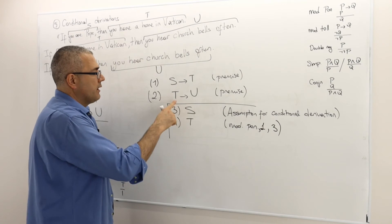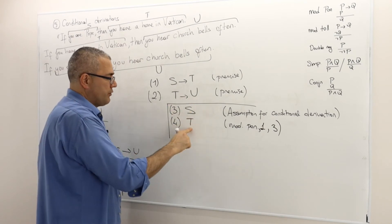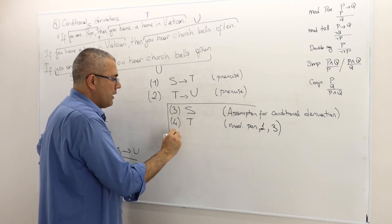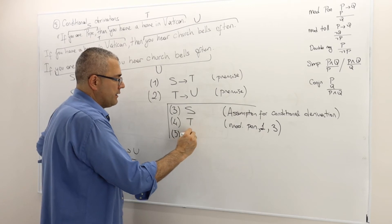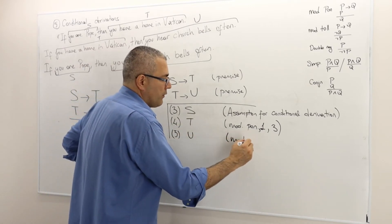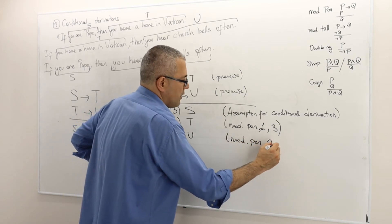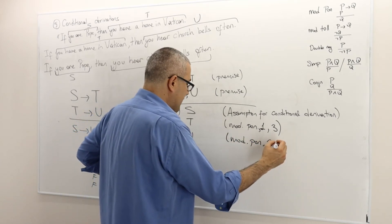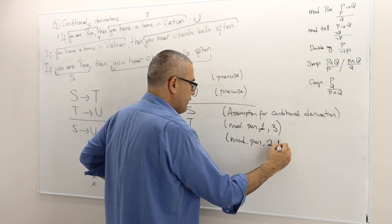What else? Well given T implies U is true and T is true in line five I can deduce that U must be true as well and this is also modus ponens, the rule that I used, by the statements in line two and four.